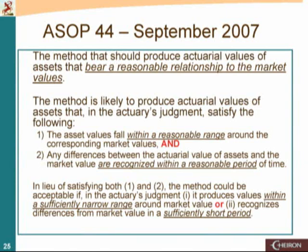But then the squishy part says, forget what we just said. In lieu of satisfying both of those, the method could be acceptable if the actuary thinks that it's an 'or': produce values within a sufficiently narrow range around market value, or recognize the differences in a sufficiently short period. So it says 'and' — both — but if the actuary thinks it doesn't have to be 'and,' we could say 'or.' That's why it's squishy.